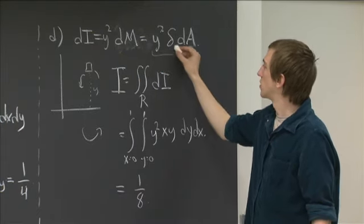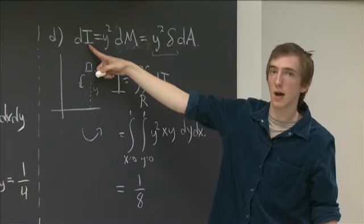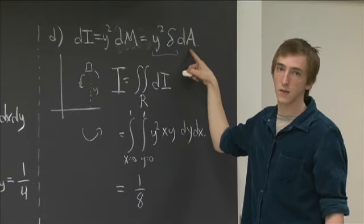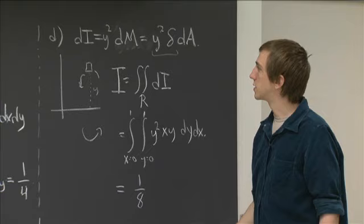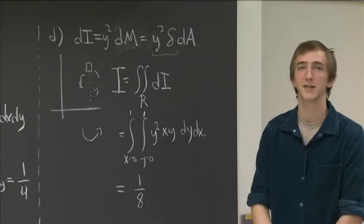So in all these examples, the infinitesimal quantity that we're after is some straightforward coefficient times the infinitesimal area. And so once we know that, then we can just do a straightforward integral. Okay, and I'll leave it at that.